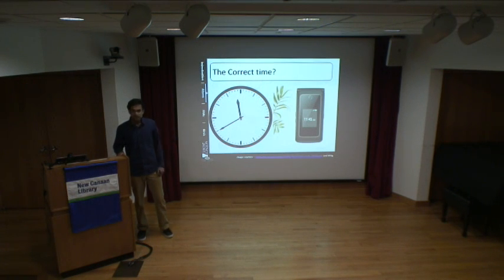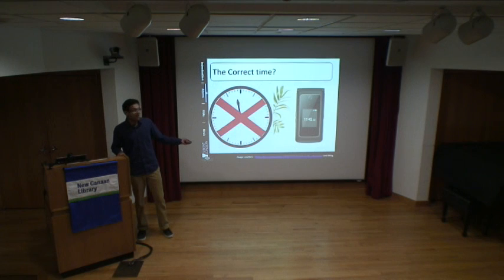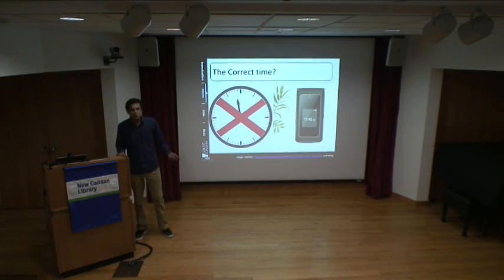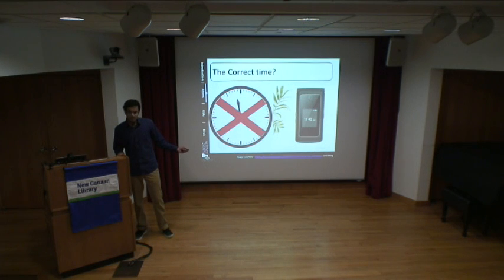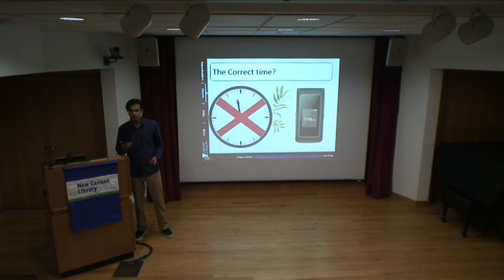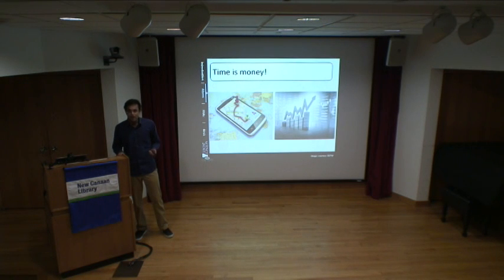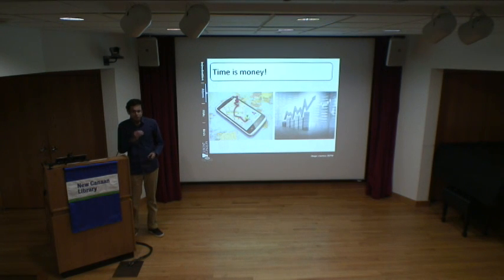As expected, most of us trust our phones over our wall clocks — and with good reason. Wall clocks can fail and drift, while phones are synced with the global clock via the internet. But there is a deeper question: what if the global clock itself is wrong? That would have massive consequences for things like GPS or real-time trading, which rely on very precise timing of signals.